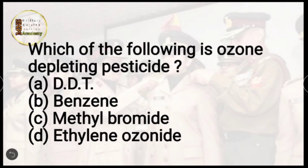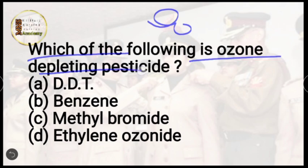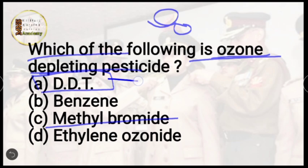Question number 8: which of the following is an ozone-depleting pesticide? Options are DDT, benzene, methyl bromide, or ethylene ozonide. The correct answer is option C, methyl bromide. What is the full form of DDT? Comment and tell me — full form of DDT.